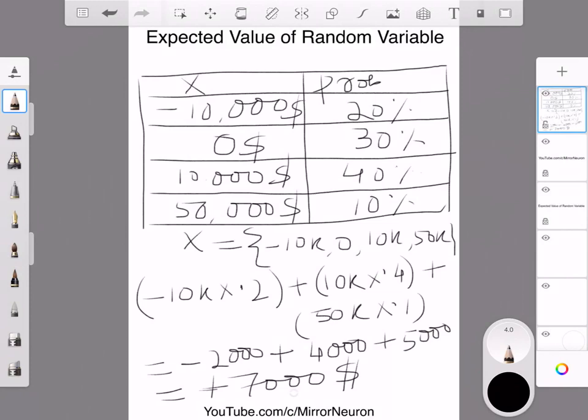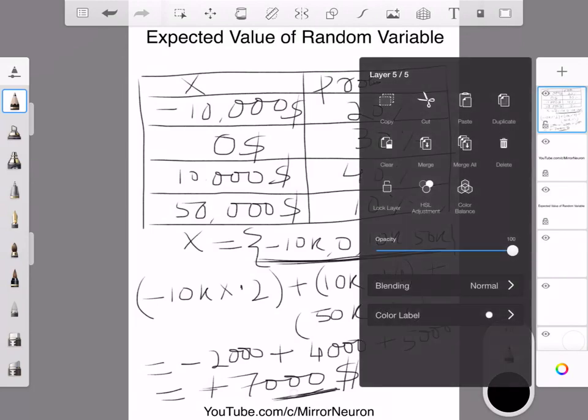Now, keep this in mind. This $7,000 value, the value itself is not part of this random variable's values. So, in real life also, you can expect things to be a bit different. This just gives you a rough idea or a sense of how much you are going to make if you start a restaurant business.